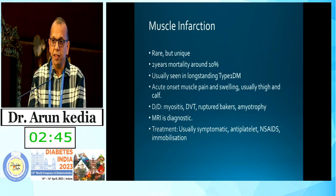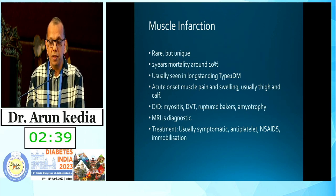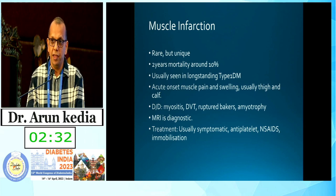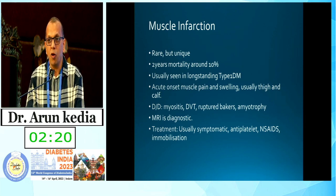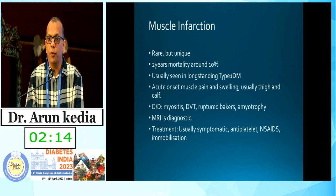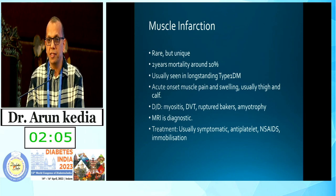Muscle infarction is very rare but unique to diabetes, with two-year mortality around 10%, usually seen in long-standing type 1 diabetes patients. It presents with acute onset muscle pain and swelling, usually in the thigh or calf muscles. Differential diagnoses include acute myositis, ruptured abscess, amyotrophy, or worm infestations of muscles. MRI is diagnostic, showing hyperintense signal on T2-weighted imaging. Treatment is symptomatic with vasodilators, antiplatelets, NSAIDs, and immobilization of the limb — it is a very devastating condition.